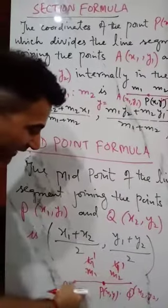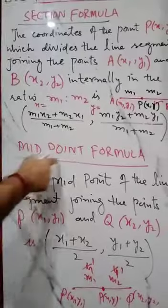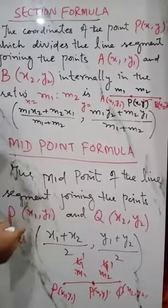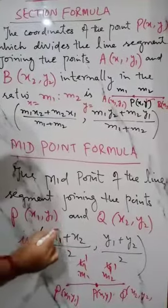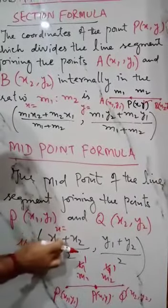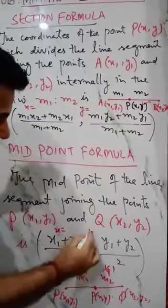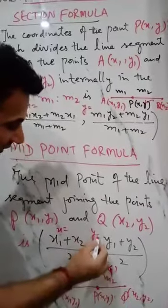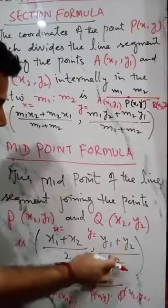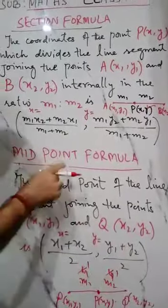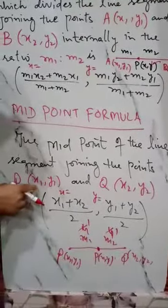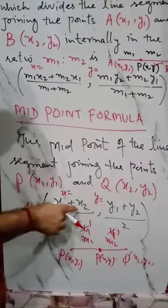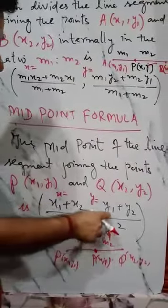When P is in the mid of the line segment, you will use the midpoint formula. The midpoint formula is: for the value of x, you will get x1 plus x2 upon 2, and to find the value of y, this is y1 plus y2 upon 2.